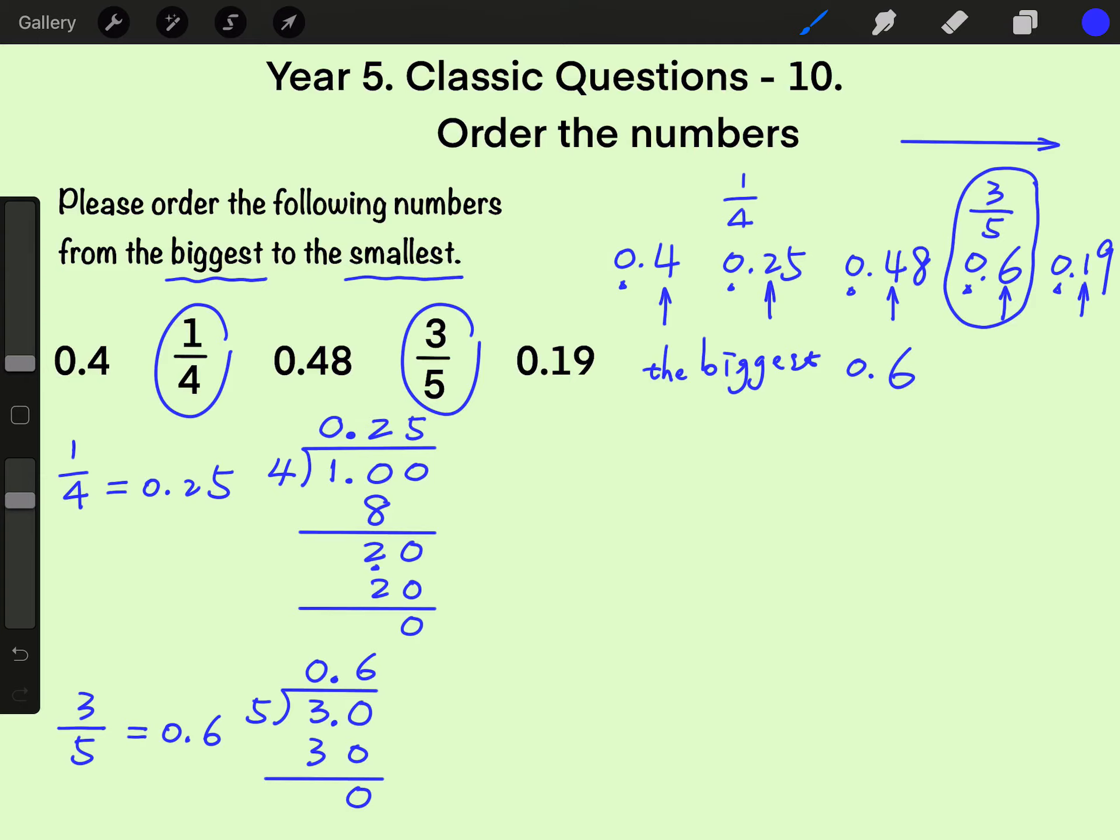Then, the smallest. You're right, the smallest is 0.19. Then, all we need to do is order these three numbers from the big one to the middle one and then to the small one.